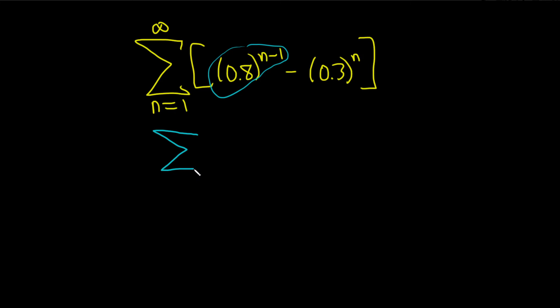Let's write it as the infinite sum as n runs from 1 to infinity of the first term, so parentheses 0.8 to the n minus 1, minus the infinite sum as n runs from 1 to infinity of 0.3 and that's also to the nth power.